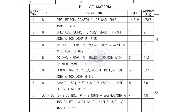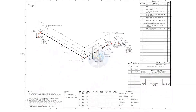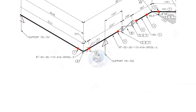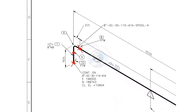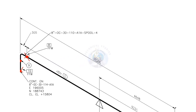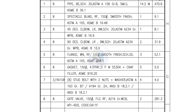Let us check what are the adjacent fittings. Item number 4 — look for what is on the other end. Both are the same item. Checking the material list: 90 degree elbow, long radius, butt weld, schedule 20, and the size is 8 inch.